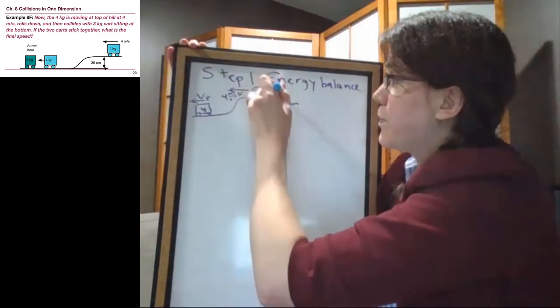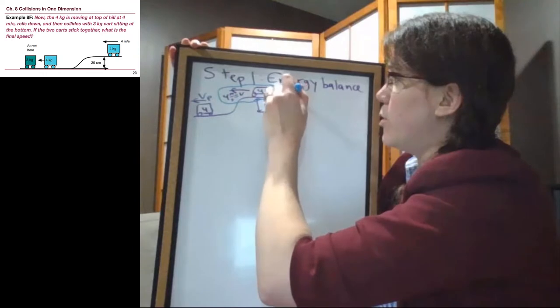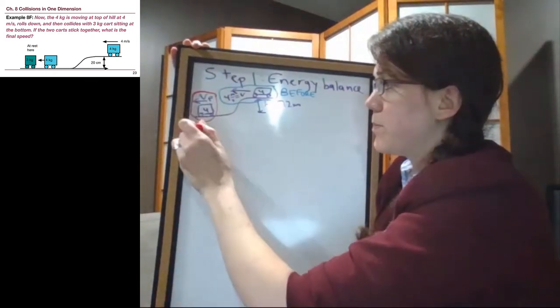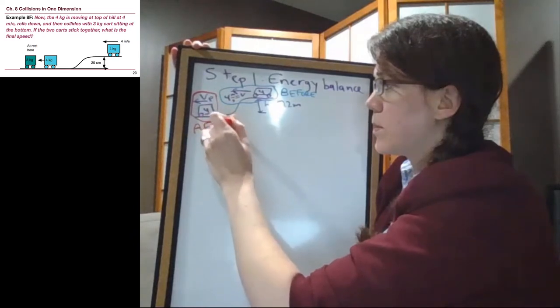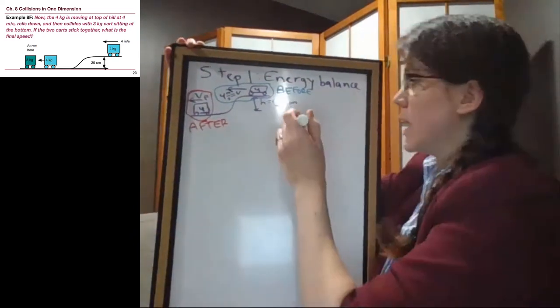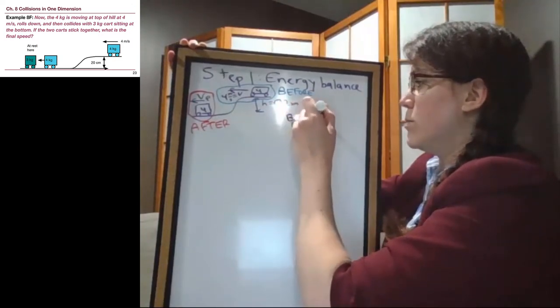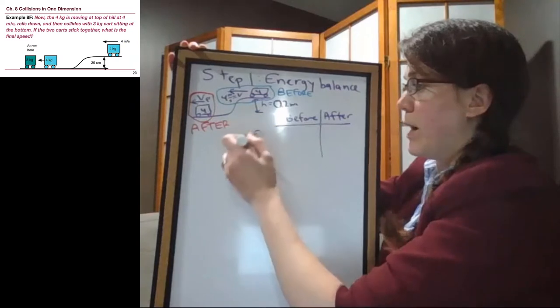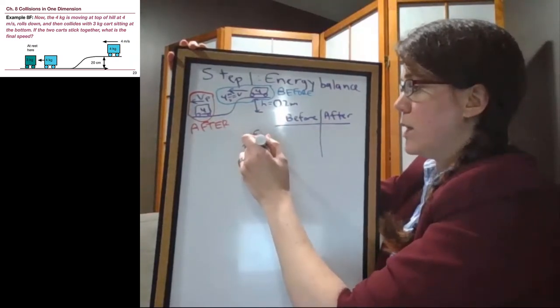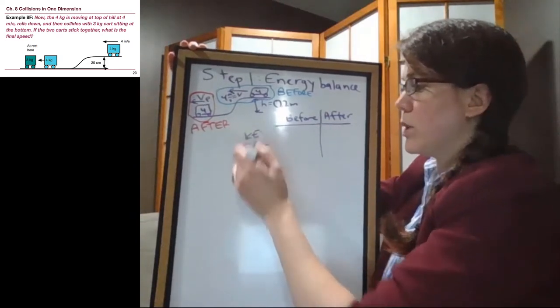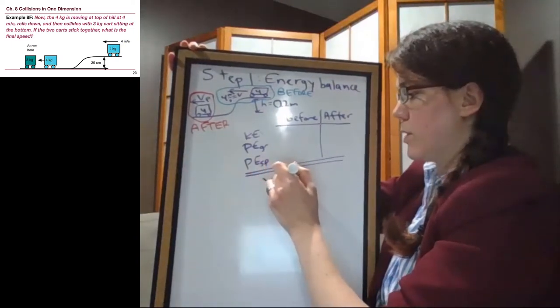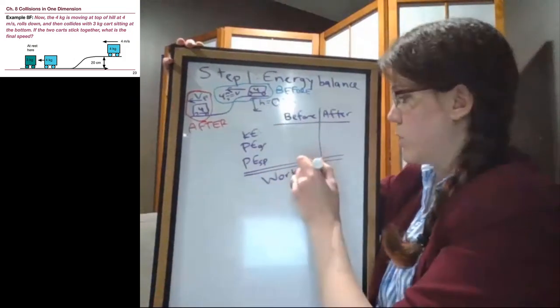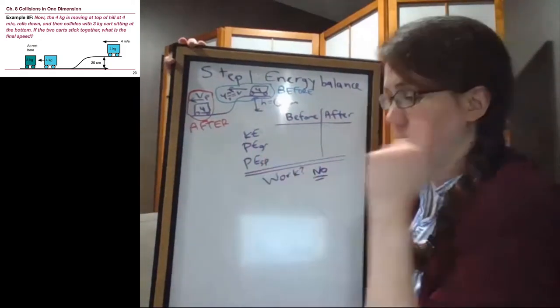And our before situation is at the top of the hill. And our after situation is here at the bottom of the hill. And so we can set up our standard energy problem, before and after, where the only mass that we are looking at is the 4-kilogram mass. We're looking if it has potential energy from gravity, potential energy from a spring, and if it has kinetic energy, as well as if there's a work term. So while I'm down here writing work term, we're looking for a push or a pull, friction, air resistance. We don't have any of those external forces that don't already have a term here.